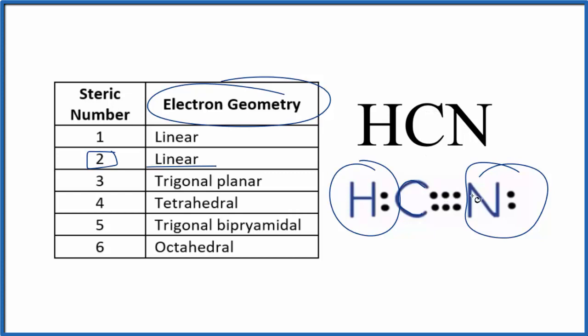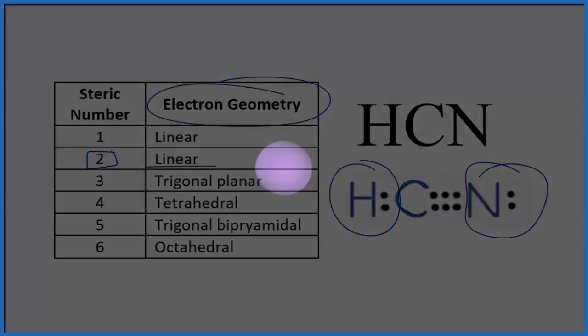Turns out this is also the molecular geometry for HCN. But let's look at this in three dimensions. So we have that hydrogen with a single bond, and then we have a triple bonded nitrogen.